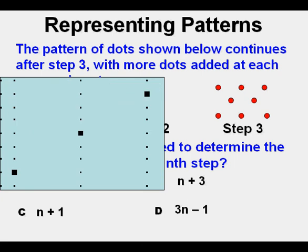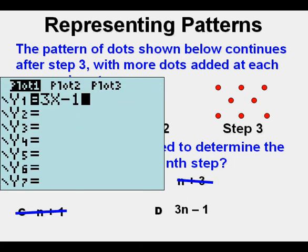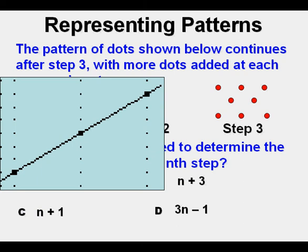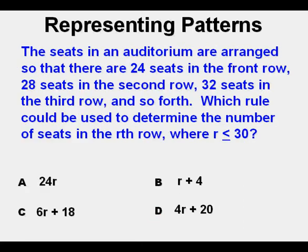Here are the points, and then we try the different choices. We tried B and C. Let's try choice D, and it does fit. So the answer is going to be 3n minus 1.